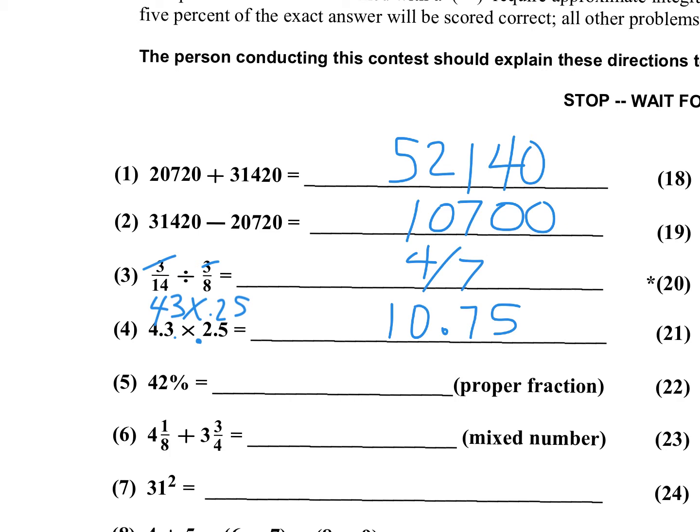Number five. They want the answer as a proper fraction so we have a percent. 42% is 42 over 100. Do not write 42 over 100. You must reduce that to 21 over 50. Reduce by a factor of 2.